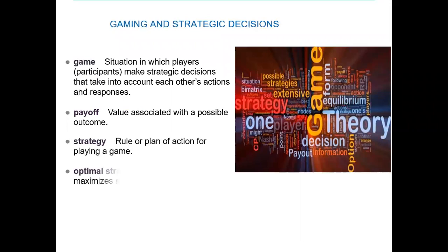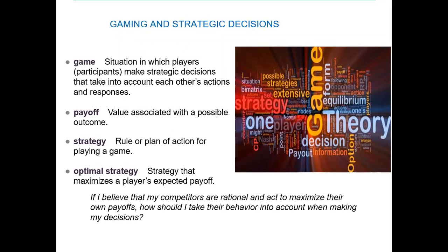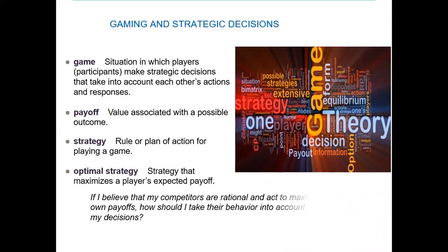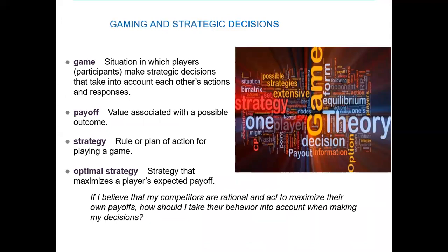Today we look at the strategies and gaming — what strategy each rival will choose, who will say yes and who will say no. We use the payoff concept as in the Cournot and Stackelberg models. A strategy is a rule, plan, or action for playing a game. We need to find the optimal strategy that maximizes the player's profit, assuming competitors are rational. In reality, some producers engage in price wars — irrational behavior — and we need to know how to react.